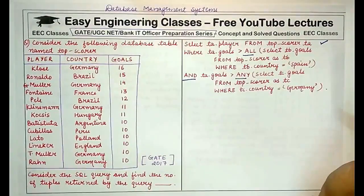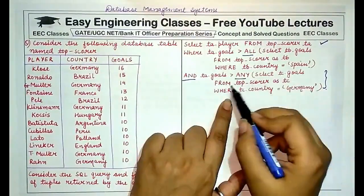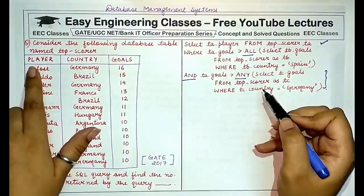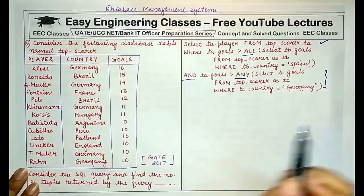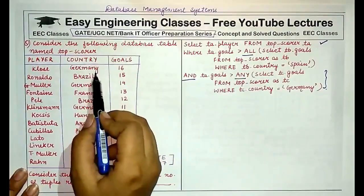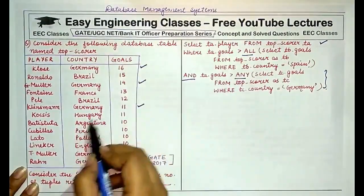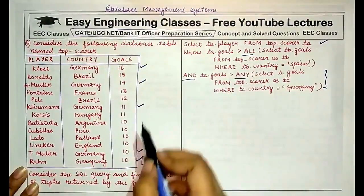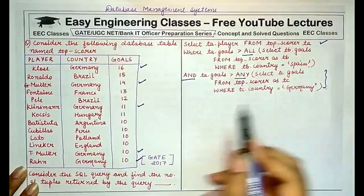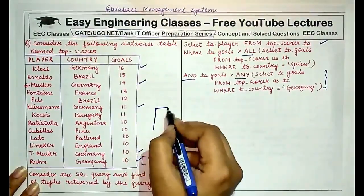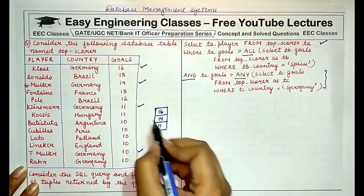The table has columns: player, country, and goals. We always start by solving the innermost query. The innermost query selects goals from TopScorer where country equals Germany. The rows with Germany give goal values of 16, 14, 11, and 10, so the innermost query result table is {16, 14, 11, 10}.